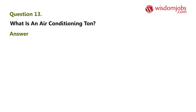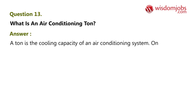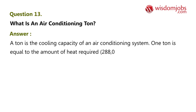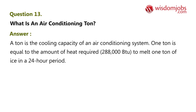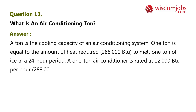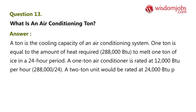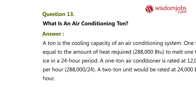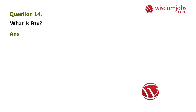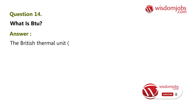Question 13: What is an air conditioning ton? Answer: A ton is the cooling capacity of an air conditioning system. One ton is equal to the amount of heat required — 288,000 BTUs — to melt one ton of ice in a 24-hour period. A one-ton air conditioner is rated at 12,000 BTU per hour; a two-ton unit would be rated at 24,000 BTU per hour.